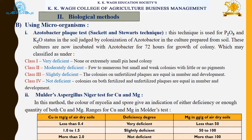Under biological methods, the next approach uses microorganisms. The Azotobacter flake method was given by Sackett and Stewards. This technique is used for P₂O₅ and K₂O status in soil, judged by colonization of Azotobacter in a culture prepared from soil. Cultures are incubated with Azotobacter for 72 hours, and colony growth is classified as class 1, 2, 3, and 4: very deficient, moderately deficient, slightly deficient, and not deficient.